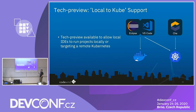As a tech preview, we also support a kind of hybrid scenario — using a local IDE you can deploy into a remote Kubernetes cluster, potentially the same cluster you're developing with on Che. Right now it's in tech preview and supported on VS Code and Eclipse IDE extensions.